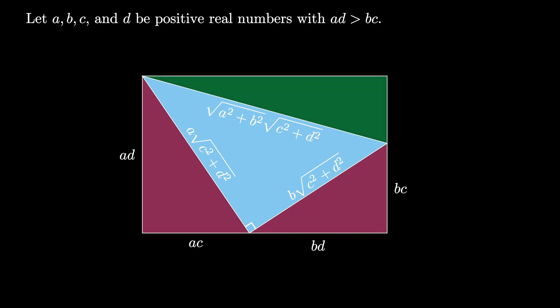One side length of this new right triangle is AD minus BC because it's equal to the difference of the two parallel side lengths of the original two triangles. The other side length of the new right triangle is AC plus BD because that length is equal to the sum of the two adjacent side lengths of the original two right triangles.